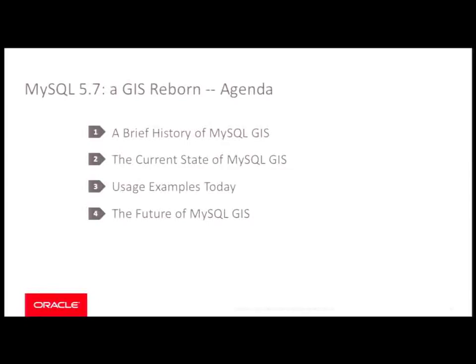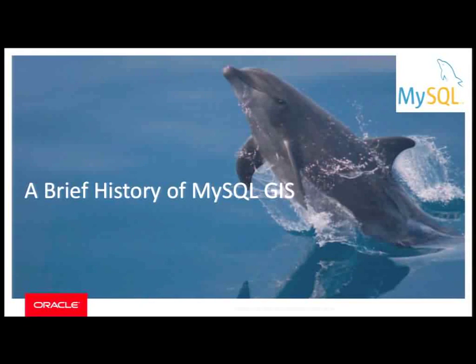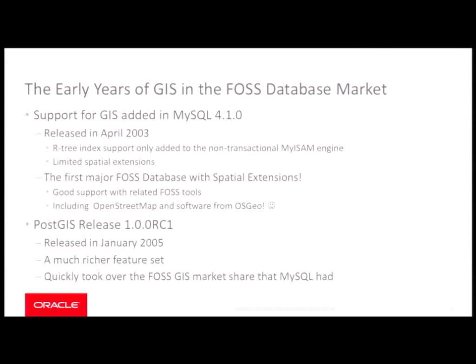So this is what I'm going to talk about today: a history of MySQL's spatial extensions, the current state, and I'll walk through a very simple usage example. It's basically using geometric points as WGS84 longitude-latitude coordinate pairs with a Mercator projection. And then I'll talk about where we want to go in the future over the next several years.